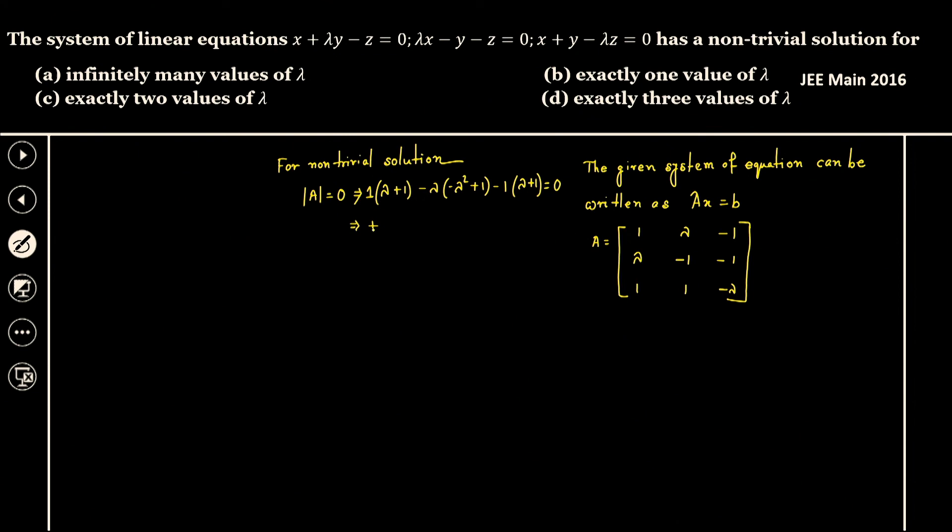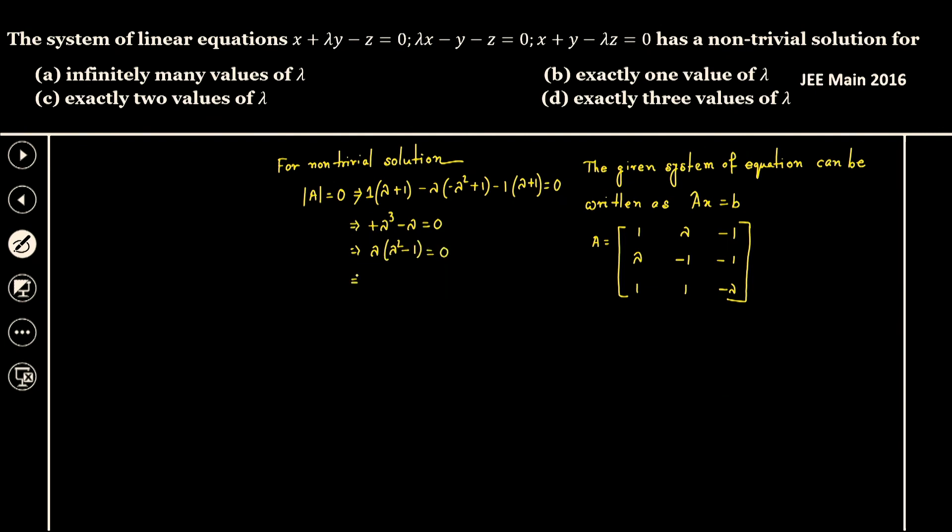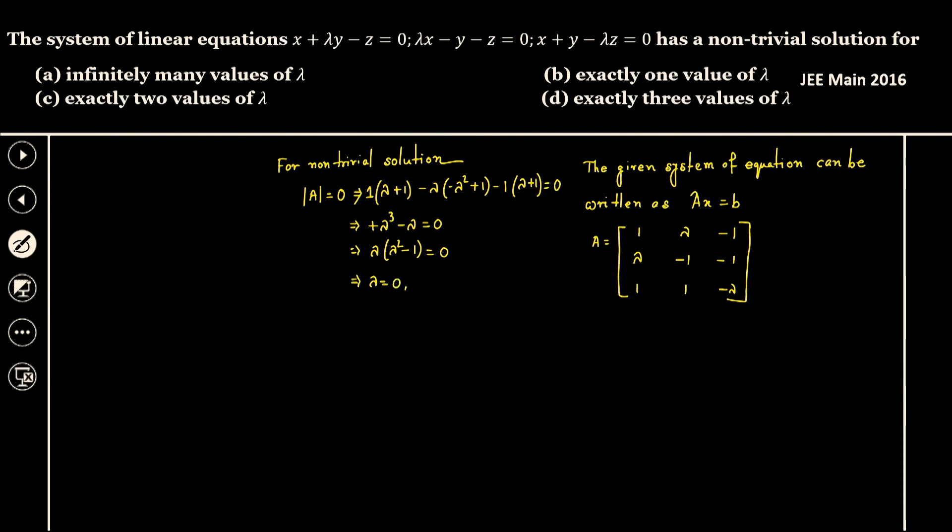So therefore we'll get it as lambda cubed minus lambda equals zero. That implies lambda taken common: lambda squared minus one equals zero. That implies lambda equals zero and plus minus one.